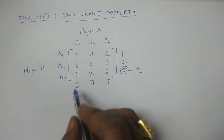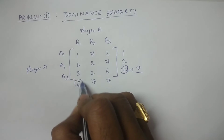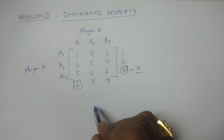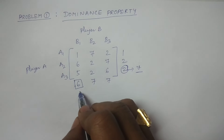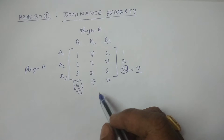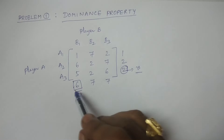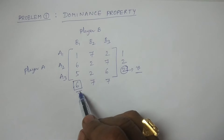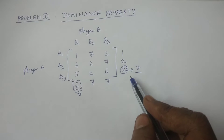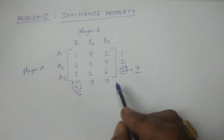Taking the minimum of column maximums gives the minimax value. Since the maximin value and minimax value are not equal, the saddle point does not exist.